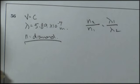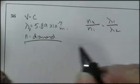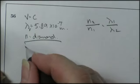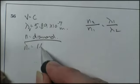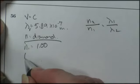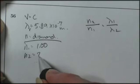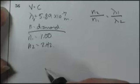I know lambda 1, the wavelength in air. And I know N1, the index of refraction in air, I've got to look that up on the chart, and I'm coming back with 1.00. The index of refraction of diamond, N2, is equal to 2.42. And I'm looking for lambda 2.